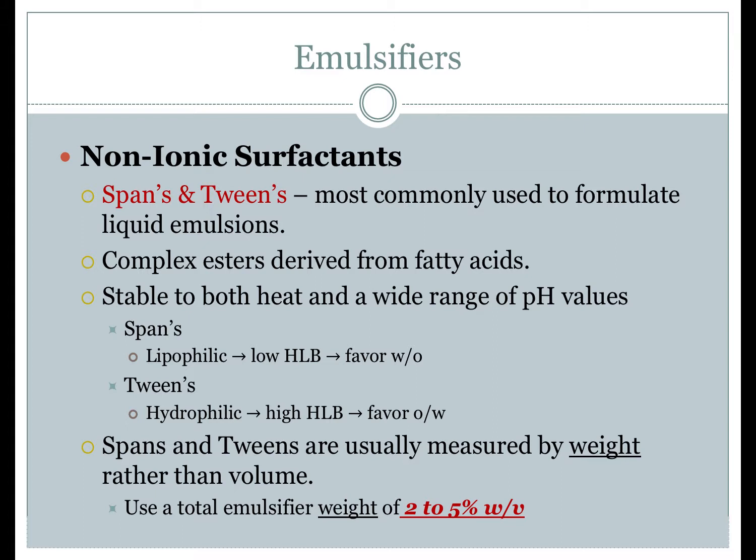The total weight of emulsifier added to most liquid emulsions is between 2–5% weight per volume. In Pharmacy Skills Lab, 5% total weight per volume is used. This means that if compounding 100 mL of an emulsion, a 5% total weight per volume requires 5 grams total of all emulsifiers. Next, we will discuss how to divide this total up between different combinations of spans and tweens.